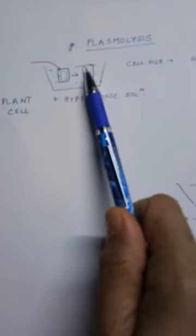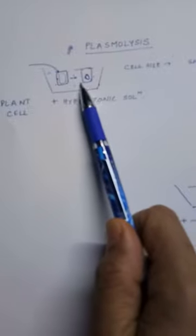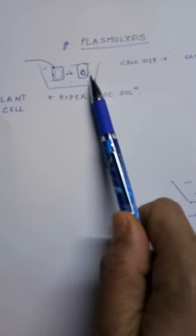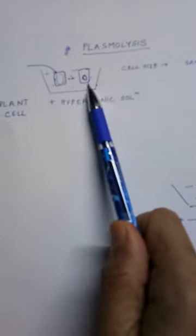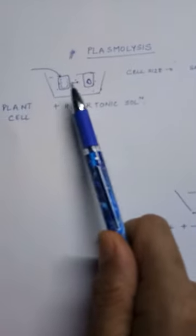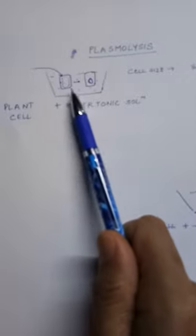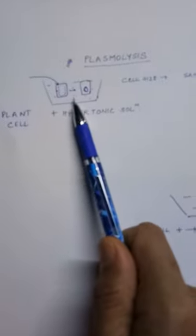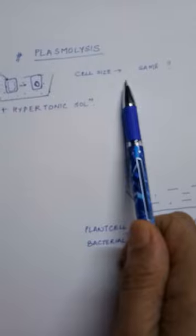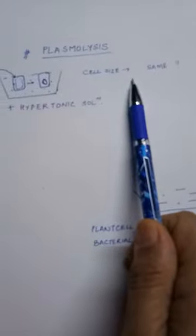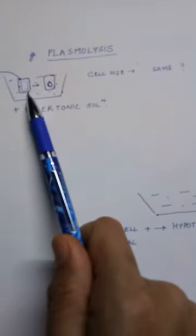After some time, the cell wall, as it is inflexible and rigid, will remain at the same place and water will move from the cell outside. Thus in this case, cell size remains the same.